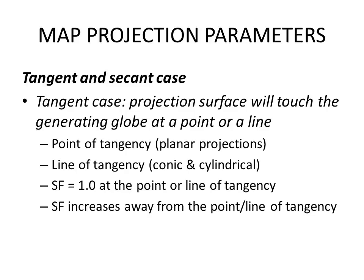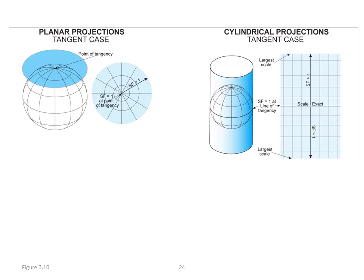Another one of the map projection parameters we need to think about is the case. The case is how the projection surface touches the generating globe. And this is where we can take the concept of either a point of tangency or a line of tangency where we have scale factors at one, those are the most accurate at the point or line of tangency, and they increase away from that point or line. But not all maps are made with simply one point or line of tangency.